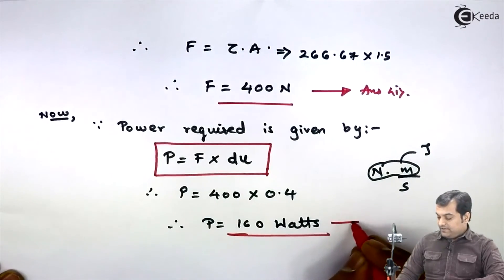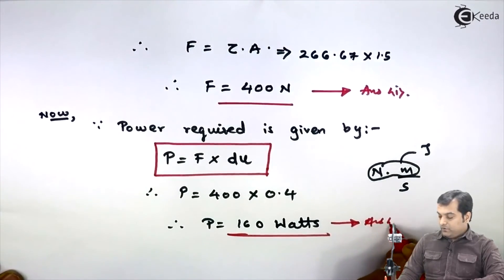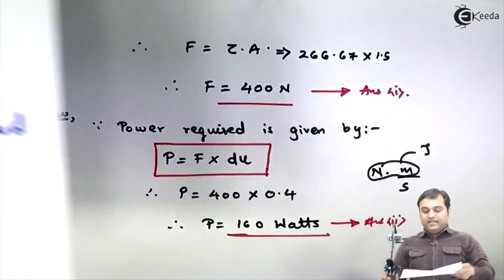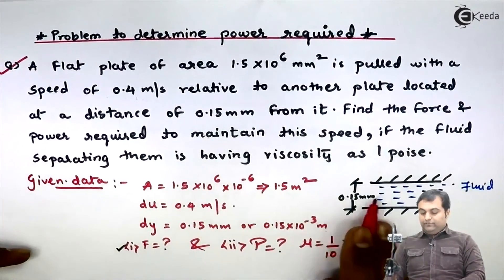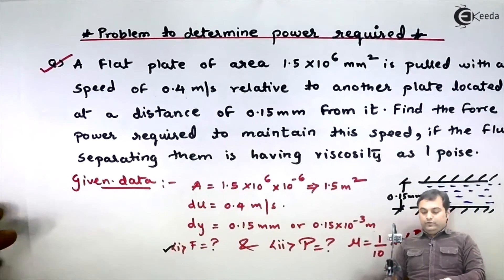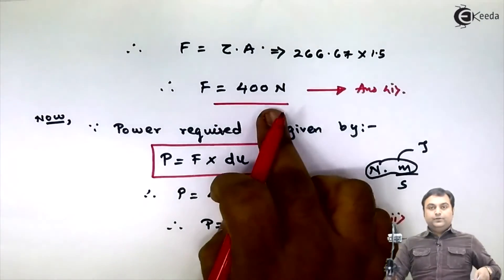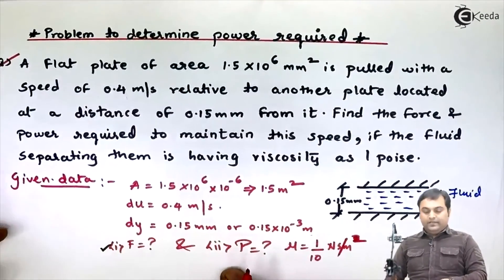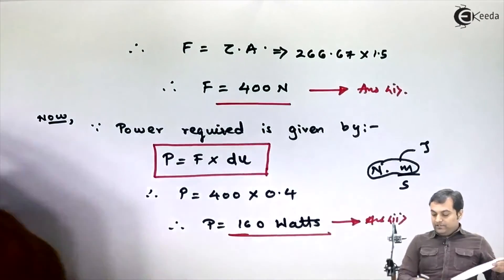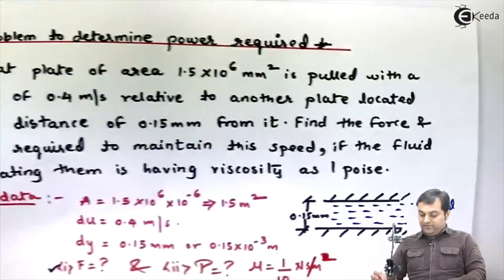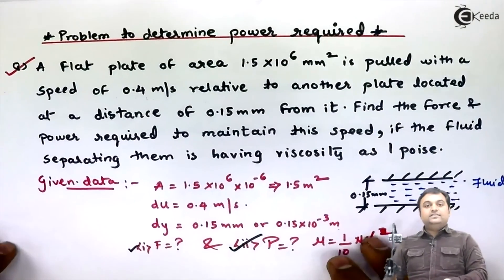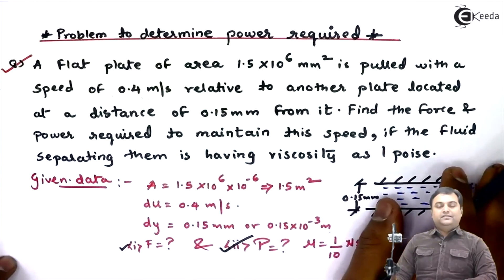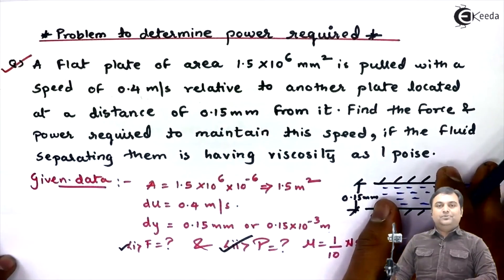So in this question two things were asked: the force required for the fluid to flow, which is 400 N, and the power required, which is 160 W. With this we have found out the power and completed the problem.